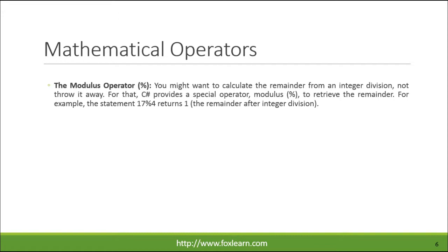The modulus operator (%) — you might want to calculate the remainder from an integer division, not throw it away. For that, C# provides a special operator, modulus (%), to retrieve the remainder. For example, the statement 17 % 4 returns 1, the remainder after integer division.